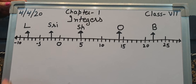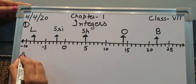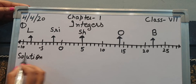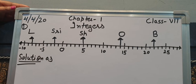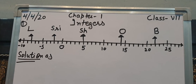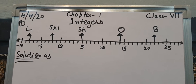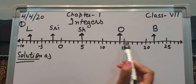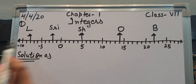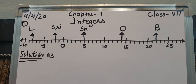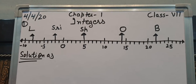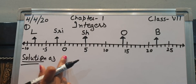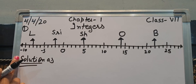Now we will do the solution of Part A, the first part. In the first part they are asking us to write the temperature of the places marked on the number line. As we have done in the previous class, on the right-hand side all integers are positive and on the left-hand side all integers are negative.